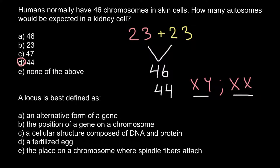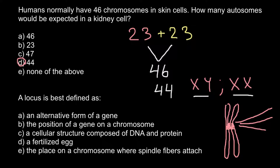I would start from the end of this list. The place on the chromosome where spindle fibers attach we call the centromere. Imagine two sister chromatids connected at the centromere — spindle fibers attach to the centromere and during cell division pull the two sister chromatids apart, at which point they become individual chromosomes. This centromere also has a kinetochore to which the spindle fibers attach. So answer E is not correct and we can cross it out.